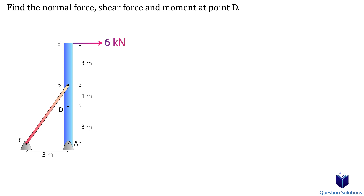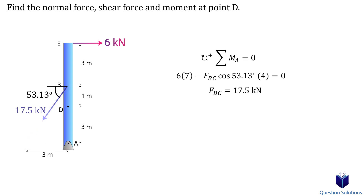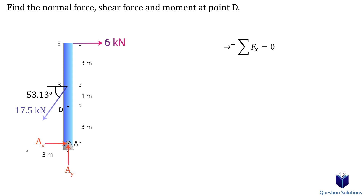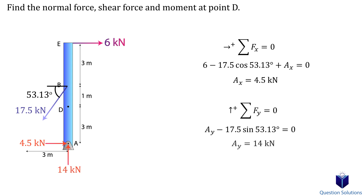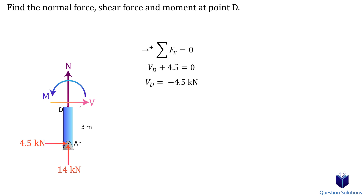Let's look at one last example where we need to find the normal force, shear force, and bending moment at point D. The first step is to figure out the reactions at A. We first identify member BC as a two-force member and find its angle using the inverse tangent. Writing a moment equation about point A gives force BC. Using that, we write equilibrium equations for the x- and y-axis forces to solve for the reactions at A. We then cut the member at D and, writing equilibrium equations for x and y, find the shear force and normal force.